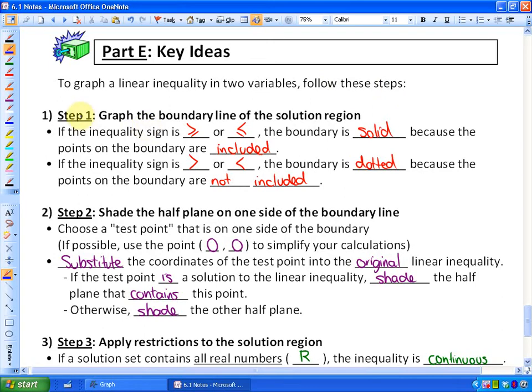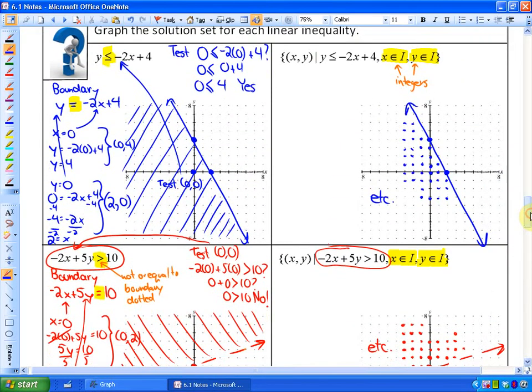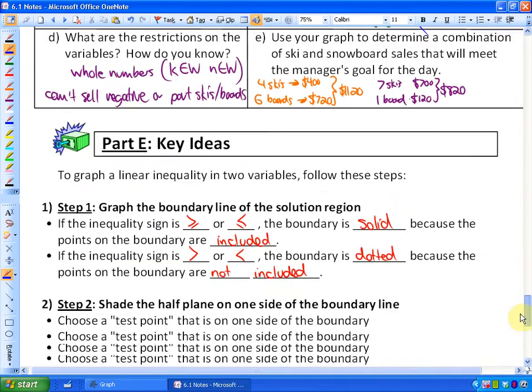Step number one, first of all, is to graph the boundary line of the solution region. So the boundary line, I can look at a few examples here. We looked at how to do that. You change the inequality sign to an equals sign and you graph the boundary line. And in order to do that, we need to find two points. My suggestion is to substitute x equals 0 into the function and get the y-intercept. Substitute y equals 0 into the function and get the x-intercept. That will give you two points.